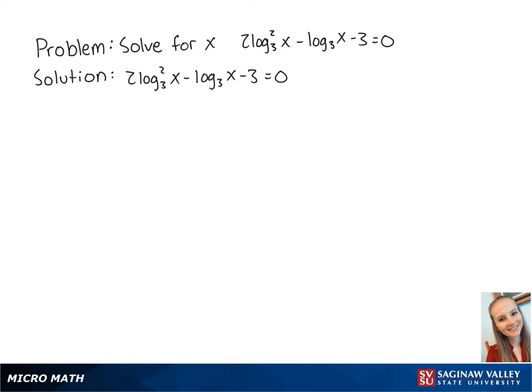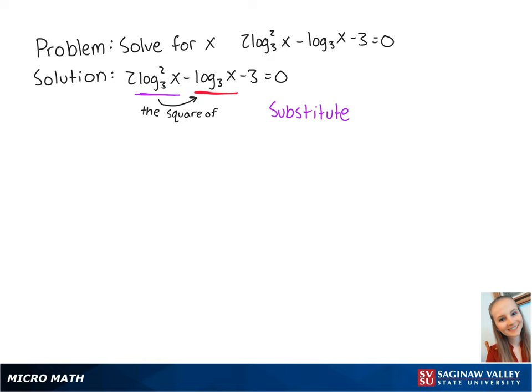For this problem, we want to solve for x in the equation 2 times the log base 3 of x squared minus the log base 3 of x minus 3 equals 0. We can see that the log base 3 of x squared is the square of the log base 3 of x, so we can make a substitution where u equals the log base 3 of x and make a quadratic equation.